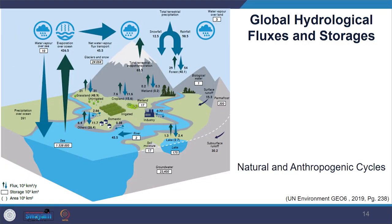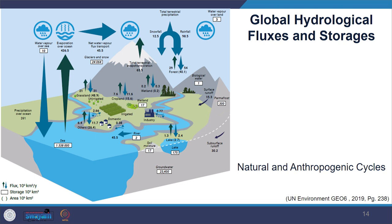There is considerable pressure on fresh water due to climate change. The global water cycle, which is the most important component of the weather and climate system, is changing. In the image you can see the global hydrological fluxes and storages, expressed in 1000 cubic kilometres per year. You can see the natural and anthropogenic cycles used for domestic, irrigation, industry and so on. The major concern is that this cycle is becoming faster due to our warming planet.